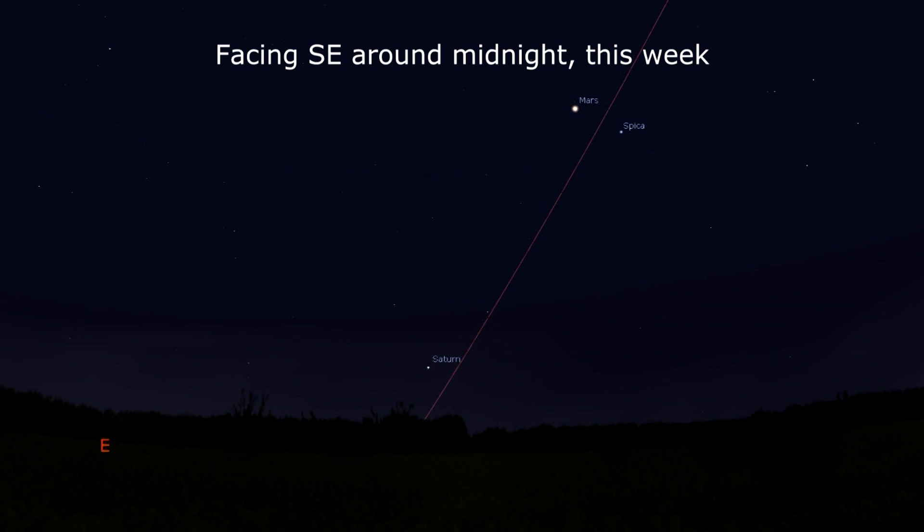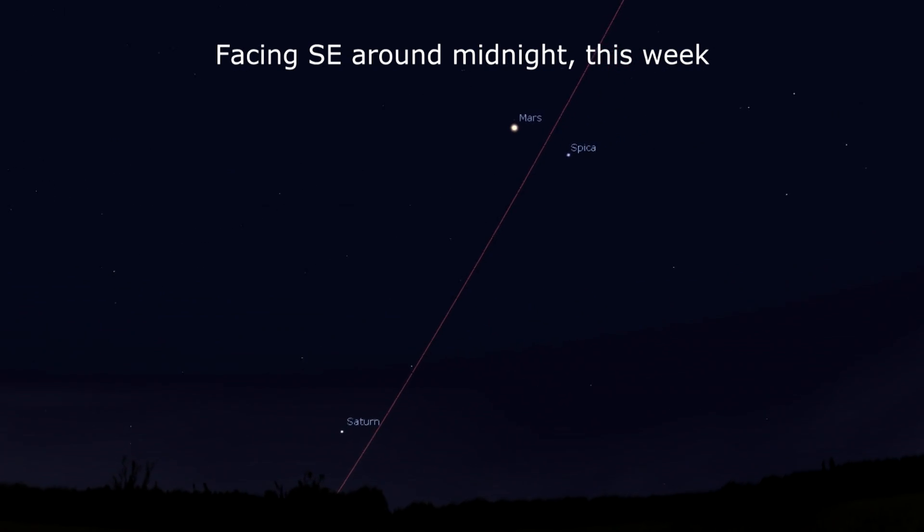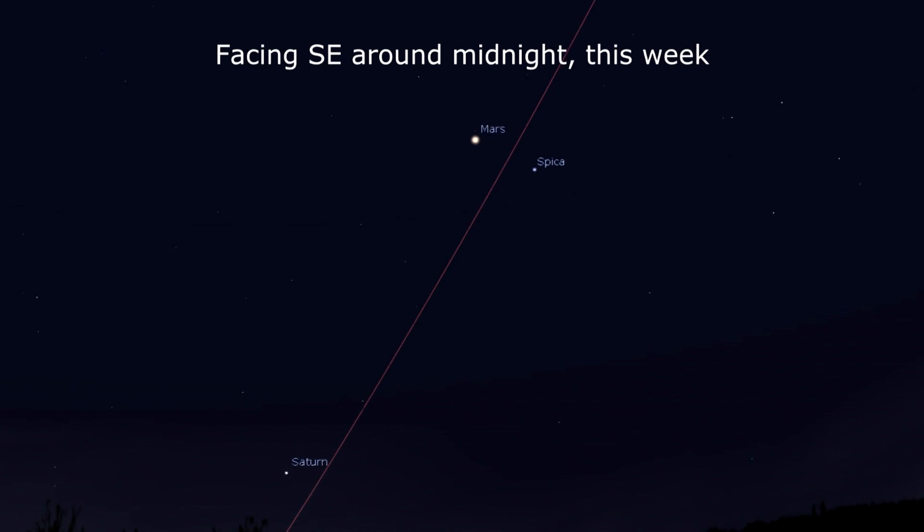Mars is starting to gain some separation from Spica, but remains within 5 degrees of the star. Nearing opposition, check out the red planet now while it's larger than 14 arc seconds across.